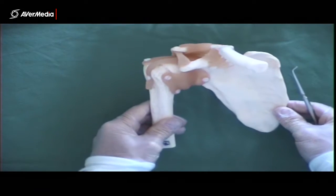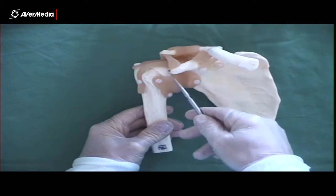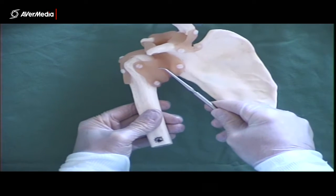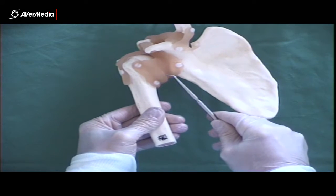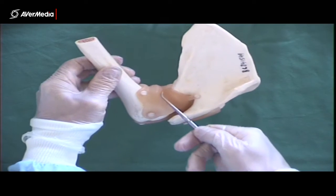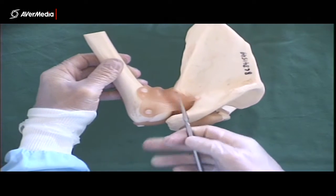Now the glenohumeral joint capsule, part of which is missing from this model, has been removed so we can see other structures. You can see it on the anterior aspect and it comes down, covers the inferior aspect of the joint and can also be seen on the posterior aspect of the joint on this model.